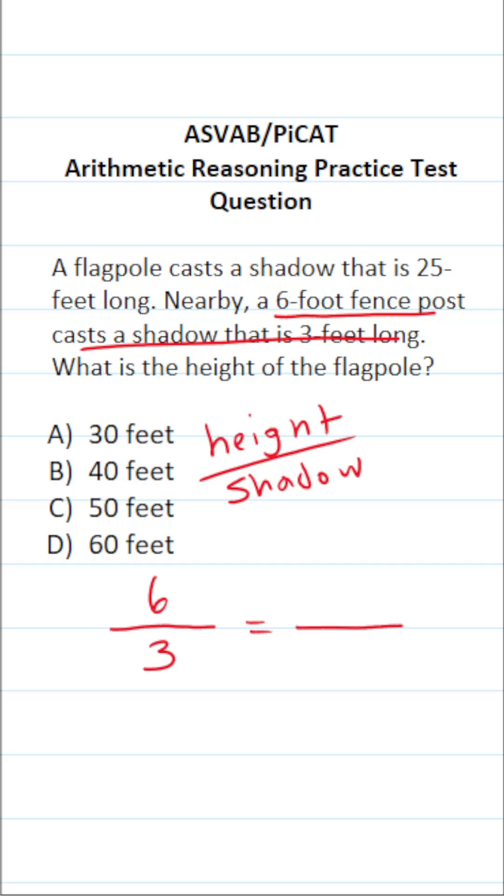It's going to be the height of the flagpole. We're being asked to find the height of the flagpole, so that's going to be an unknown, let's call it X, over the length of its shadow. Its shadow is 25 feet long according to the problem.